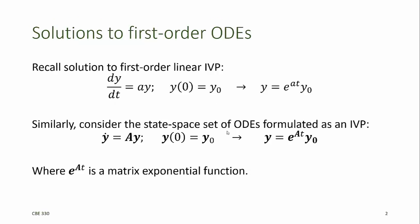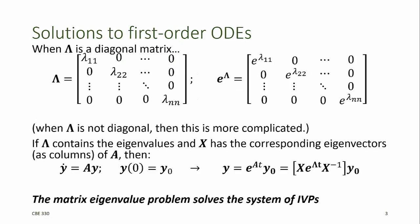Recall that the solution to the first order linear initial value problem looks like this — the dependent variable is described as an exponential multiplied by the initial value. Similarly, for a linear set of ODEs formulated as an initial value problem, we can write the solution in matrix and vector notation, where e to the At is a matrix exponential function. That matrix exponential function takes on an easy form when the matrix in the exponent is a diagonal matrix, as shown here. When the matrix in the exponent is not a diagonal matrix, this solution is much more complicated.